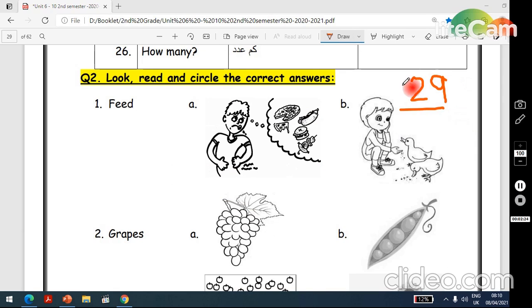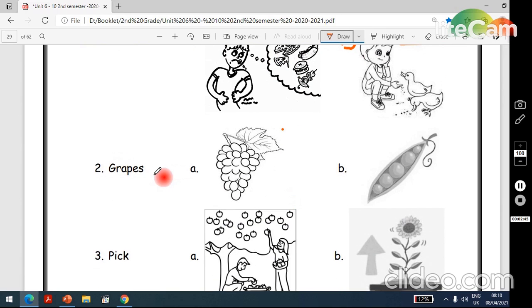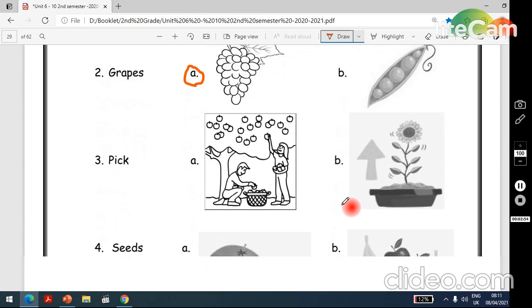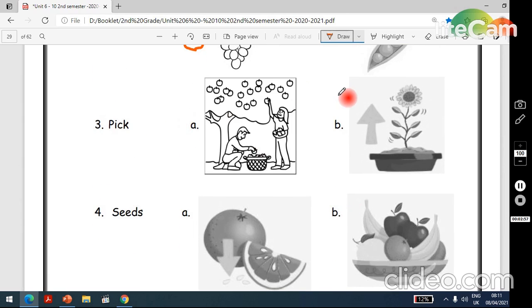Now let's move to page 29. Look, read and circle the correct answers. Feed, which one is feed? A or B? Yes, picture B. Feed a hungry. What about number 2? Grapes, A or B? Yes A. B, here we have peas. What about 3? Pick, A or B? Yes A.